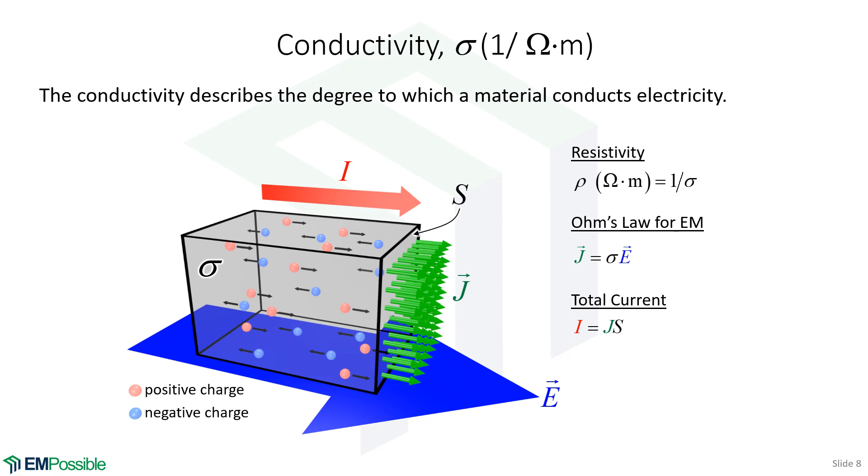And, of course, if we want to know the total current through a material, we really would have to add up all of this current density. We would integrate over the cross-section of the conductor. But if we know the area, the cross-sectional area, then J times the cross-sectional area gives us total current.